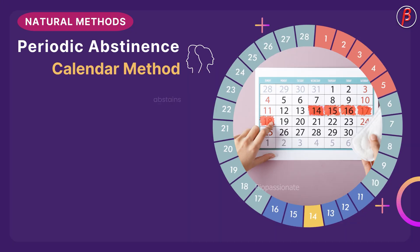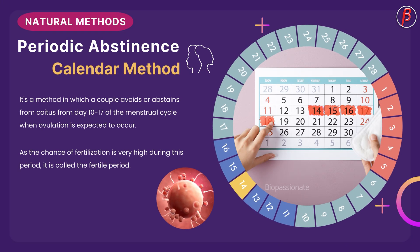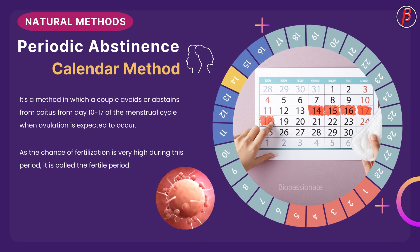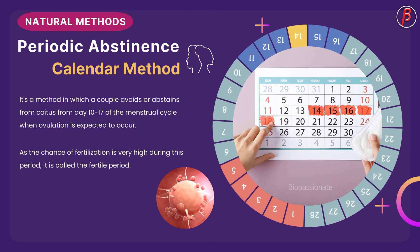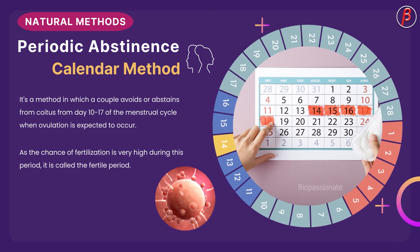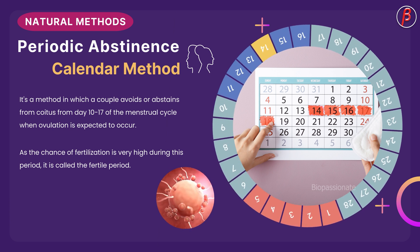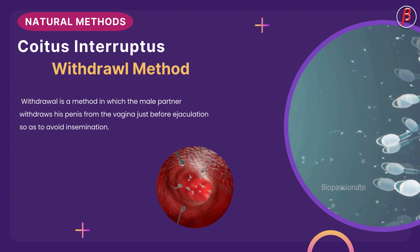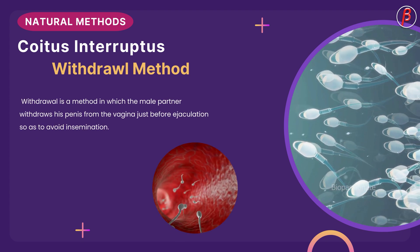Periodic abstinence is also called the calendar method. In this method, a couple avoids or abstains from coitus from day 10 to 17 of the menstrual cycle, when ovulation is expected to occur. As the chance of fertilization is very high during this period, it is called the fertile period. Coitus interruptus is also known as the withdrawal method.